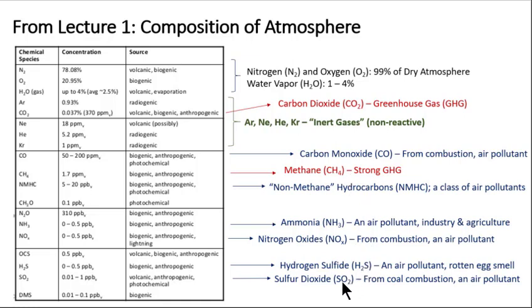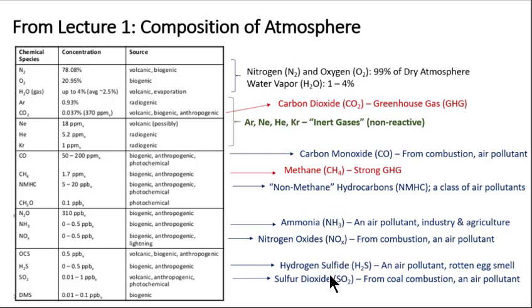Scanning the elements that comprise the chemical compounds of these air pollutant and greenhouse gases, one can see common elements. Nitrogen, for example, in nitrogen oxides and ammonia. Carbon, for example, in carbon dioxide, methane, carbon monoxide, and non-methane hydrocarbons. And sulfur, for example, in sulfur dioxide and hydrogen sulfide.